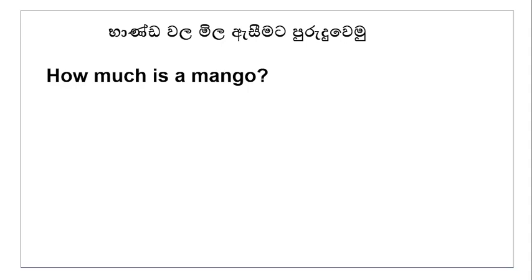Baanndavale milayasimata purunduwe — oot api mila haana — how much is a mango? How much kee anna mila kee. Amba gediya kee yada — how much is a mango? It's — it is kee nega. It's twenty rupees. Rupee al visay — it's twenty rupees. How much is a mango? It's twenty rupees.